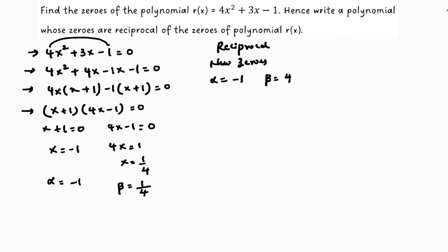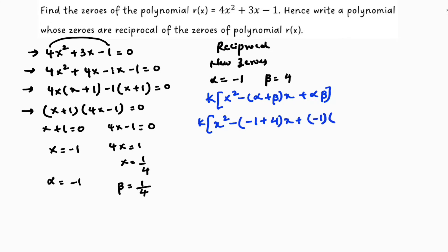These are the two new zeros. The formula to find the polynomial is k(x² - (alpha + beta)x + alpha·beta). So k(x² - (-1 + 4)x + (-1)(4)), which gives k(x² - 3x - 4). So the new polynomial is x² - 3x - 4.